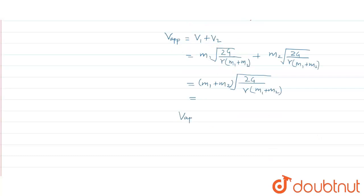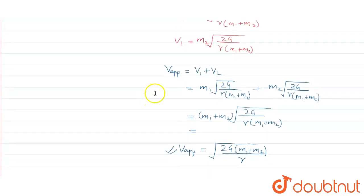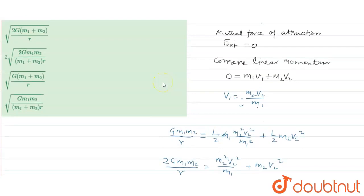v approach will be under root 2G times m1 plus m2 divided by r. This will be the answer. So this one is correct. Thank you.